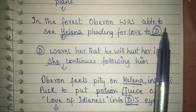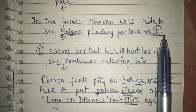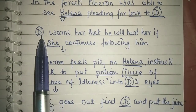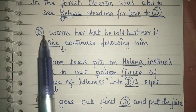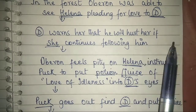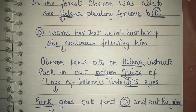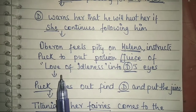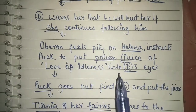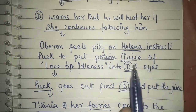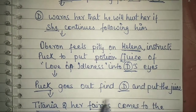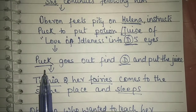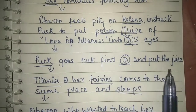Meanwhile, Oberon was able to see Helena pleading for love to Demetrius. He became very sad for her and also saw that Demetrius warned her that he will hurt her if she continues following him in the forest. Feeling pity on Helena, Oberon instructs Puck to put the potion of love-in-idleness into Demetrius's eyes so that Demetrius will start loving Helena. Puck goes out to find Demetrius and put the juice.